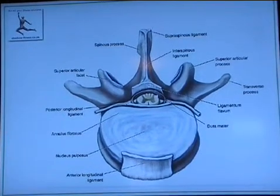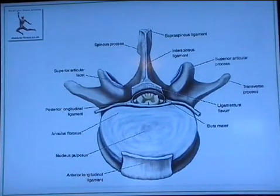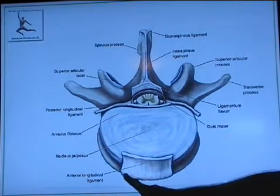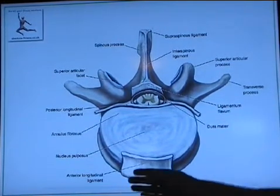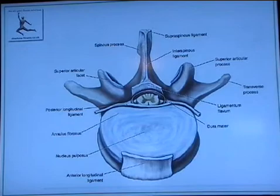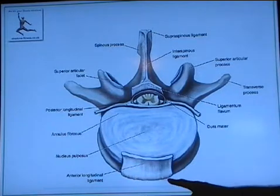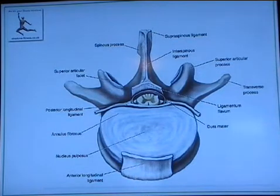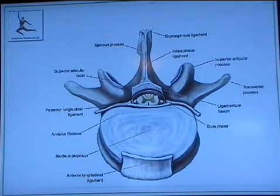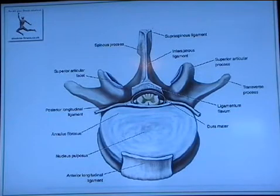We're now looking at ligaments of the spine. One of the main ones we can see is here at the front, at the anterior aspect of the vertebrae — in front of the vertebral body. This is what we call our anterior longitudinal ligament, and it runs from the very top to the very bottom down the front of the bodies of the vertebrae themselves.